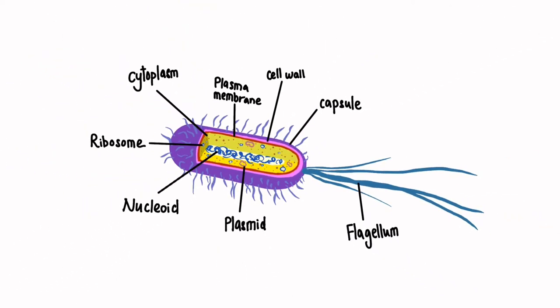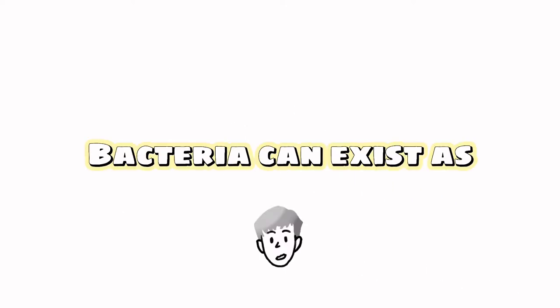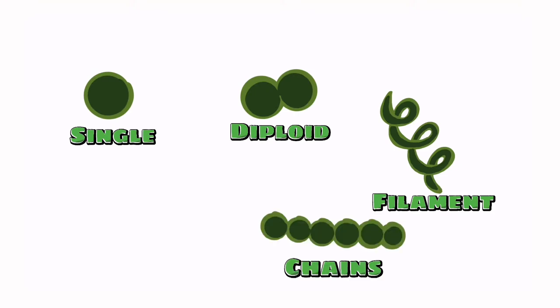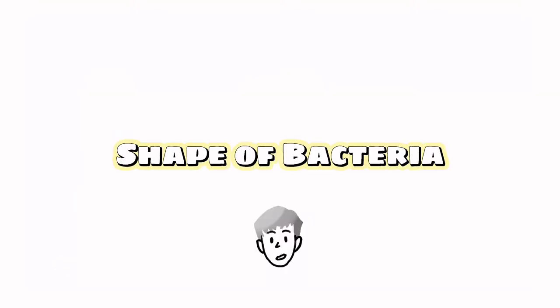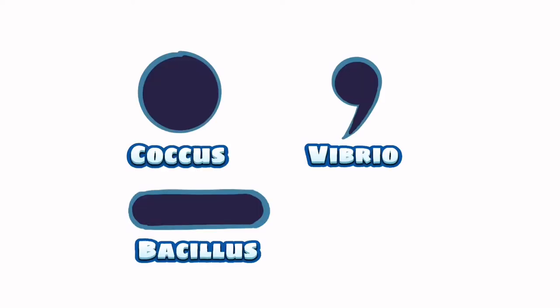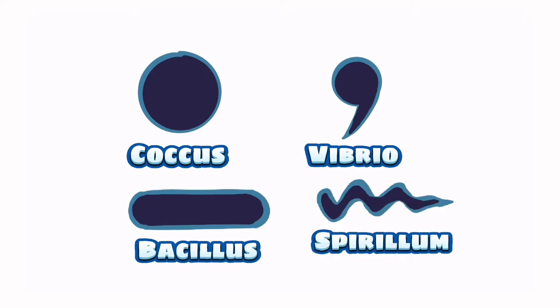The size of a bacteria is from 1 to 10 micrometers long, which means very, very small. Bacteria can exist as a single cell, a diploid, in filaments, chains, or cluster. They can exist in a few shapes, such as the coccus, vibrio, bacillus, and spirillium.